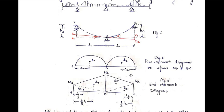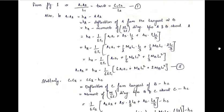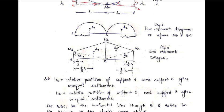Using the two diagrams to derive the three-moment equation: in triangle a1-a2-B, tan(theta) equals the perpendicular a1a2 divided by base l1. In triangle c1-c2-B, tan(theta) equals c1c2 divided by l2. Since both tan(theta) values are equal, we write: a1a2 / l1 = c1c2 / l2. This is equation number 1.